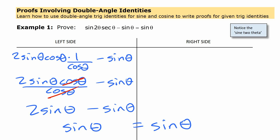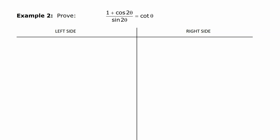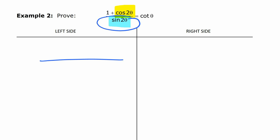Alright, let's try another one here. This identity that we're going to prove involves a fraction on the left that has both a double angle expression for cosine and sine, and then a single trig function on the other side. So we're going to start with this side and see what we can do with it. A great first step again is to change each of those things to something we know it's equal to. I'm going to start with the bottom because there's no choice involved — I only have one option for that, which is 2 sine theta cos theta.